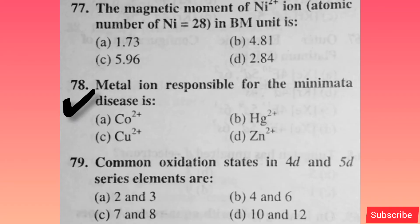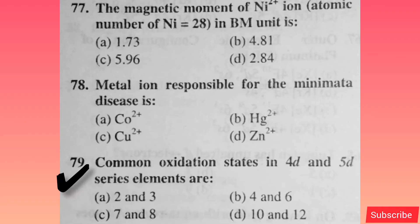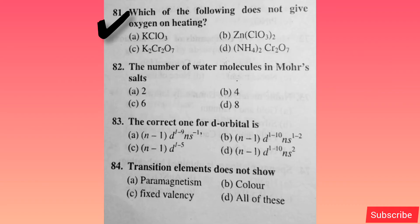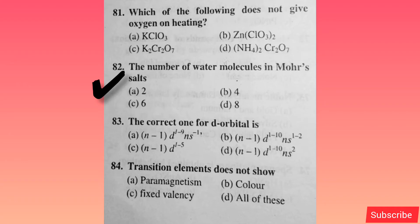Metal ion responsible for Minamata disease is — option B is correct. Common oxidation state in 4D and 5D series elements — option C is correct. Which of the following statements about the interstitial compound is incorrect? Option B is right. Which of the following does not give oxygen on heating? Option D is correct. The number of water molecules in Mohr's salt — option C is correct.